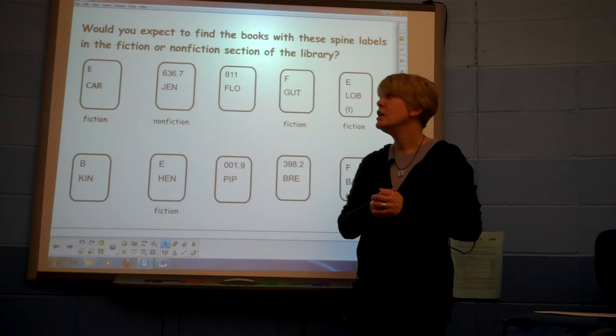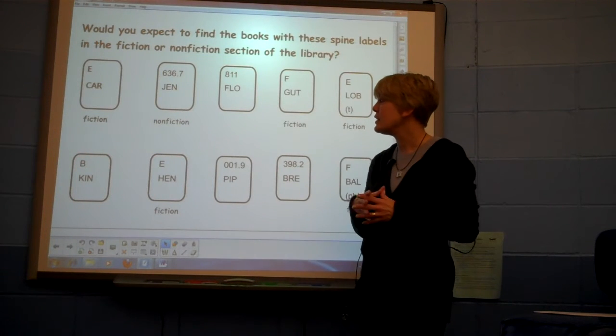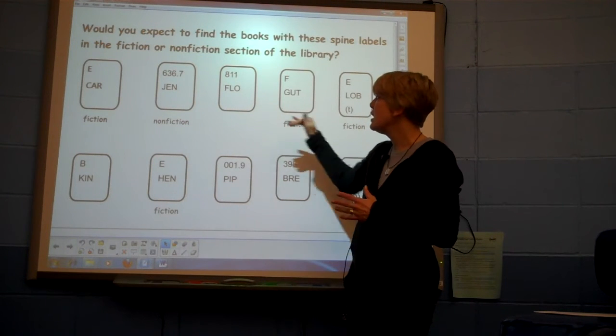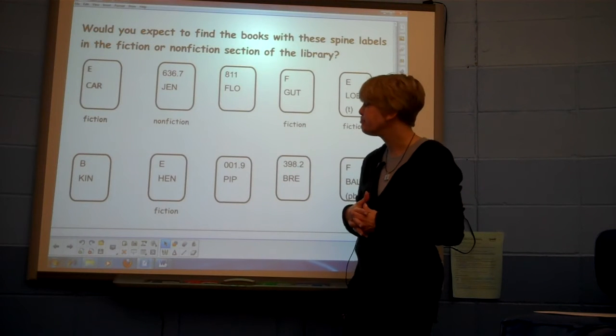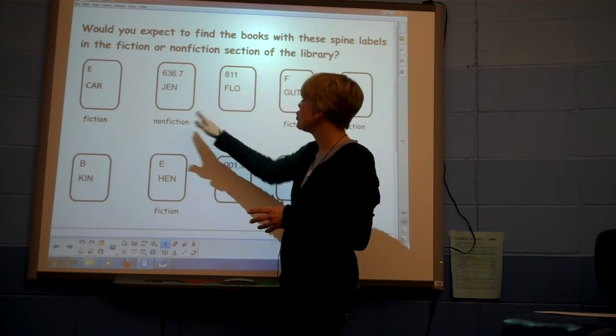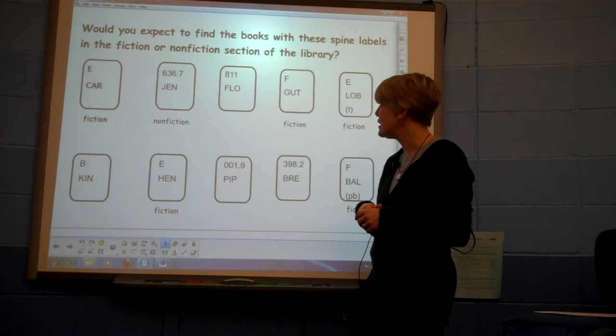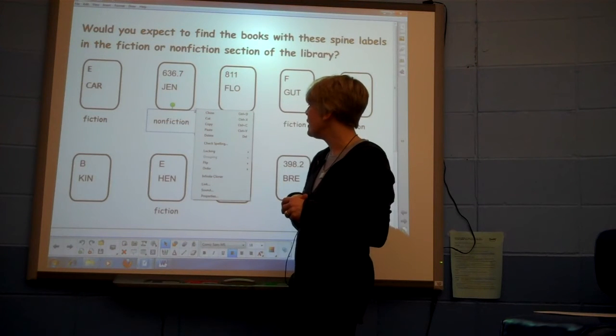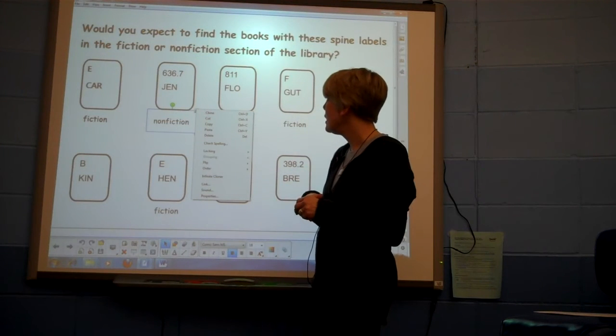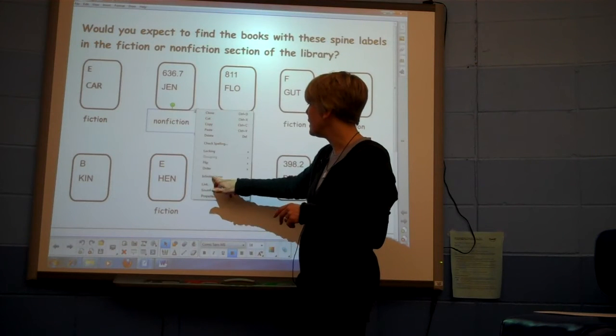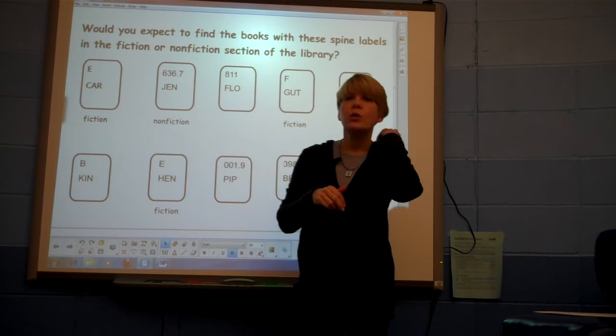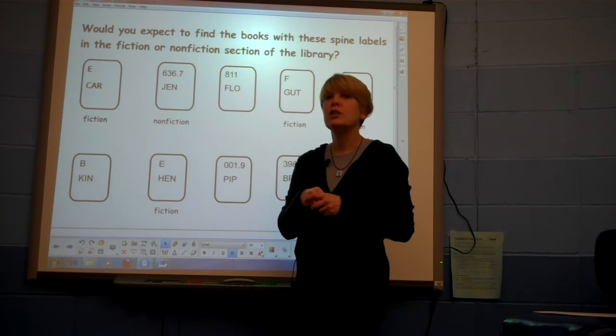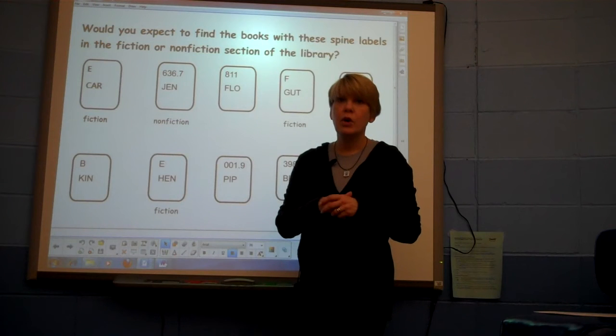So you can keep the font style and size and color and all of that business under each one without having to adjust it each time. So in order to get the answer non-fiction under the remaining spine labels, I'm going to click on that word non-fiction, I'm going to click on the object tool drop down menu, and I'm going to click infinite cloner. What that enables me to do is to just tap on that word non-fiction and drag clones of it wherever else I want on the page.